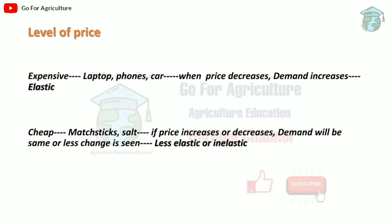The next factor is level of price. Products can be expensive or cheap. For expensive products like laptops, phones, and cars — when the price decreases even a little, we go and buy them. We literally wait for offers or discounts on expensive products. So if an expensive product's price decreases, demand increases — making expensive products elastic.